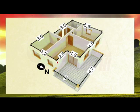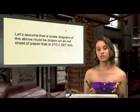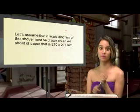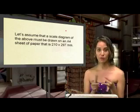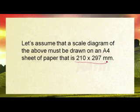You can see over here we have 4.2 plus 4, and over there we have 2.5 and 4.5 — that is our length and that is our breadth. Let's assume that a scale diagram of the above must be drawn on an A4 sheet of paper that is 210 by 297 millimetres. So now we know the dimensions of the paper — it's A4, and they give us the exact dimensions, which is important.